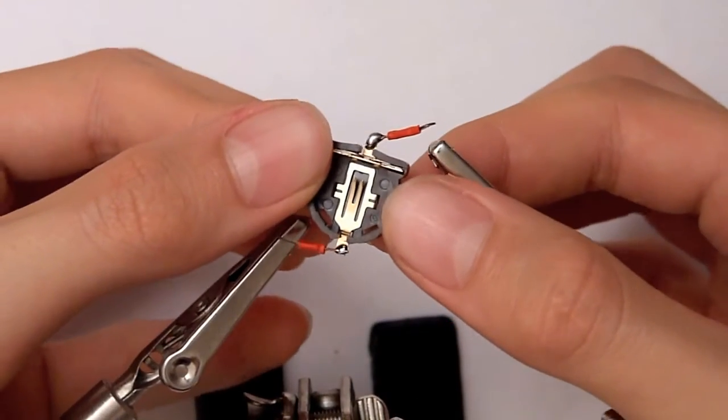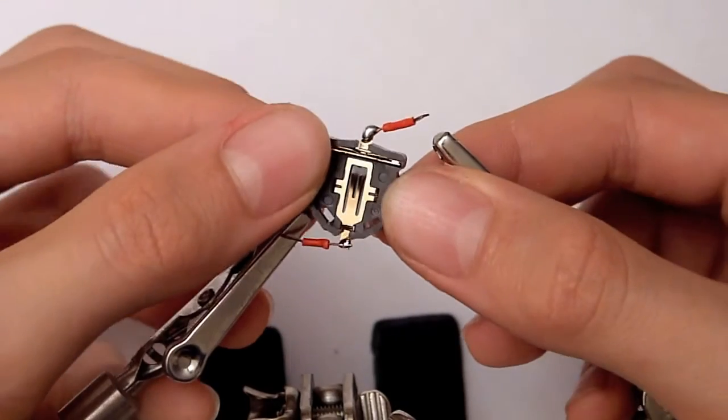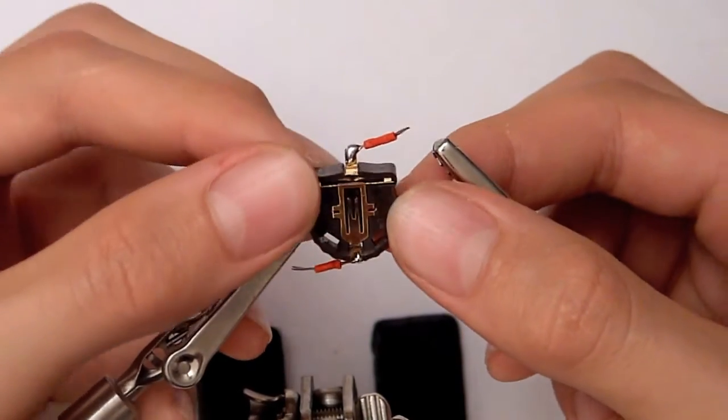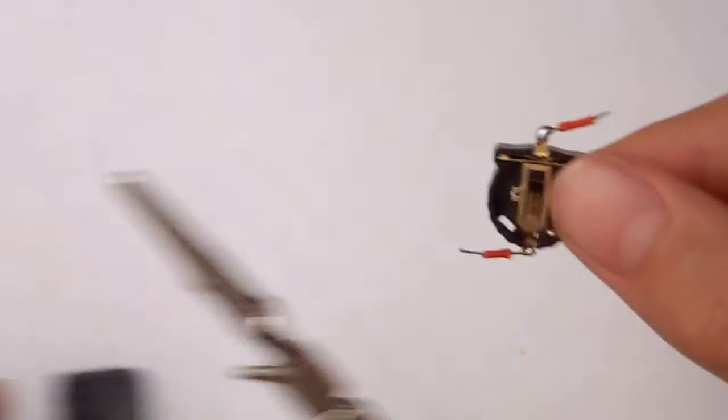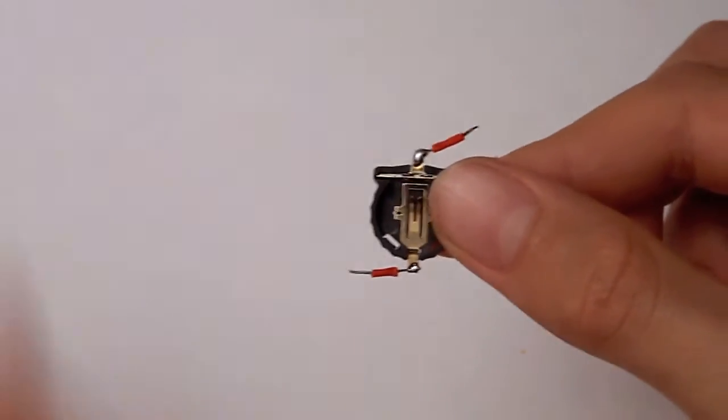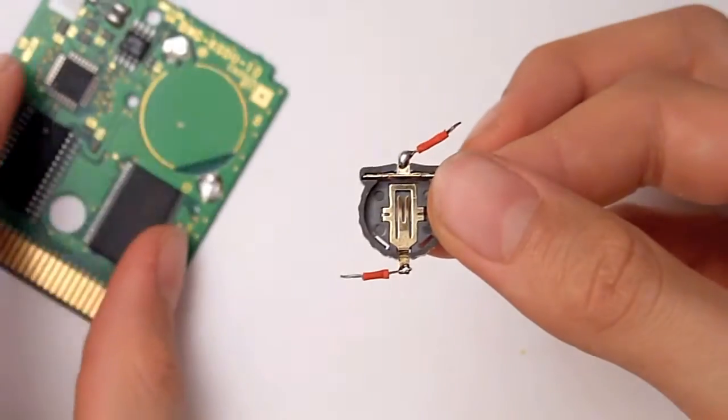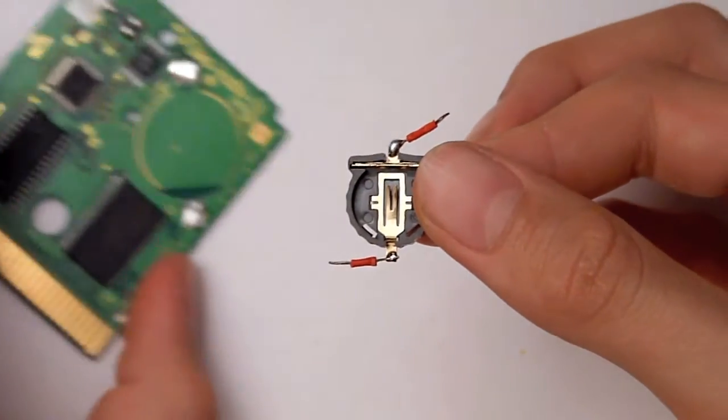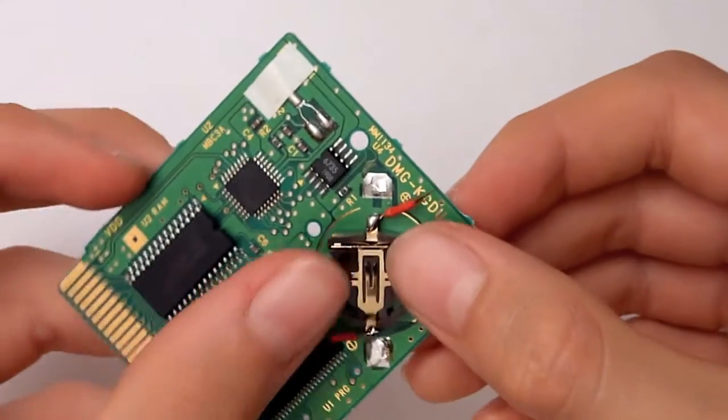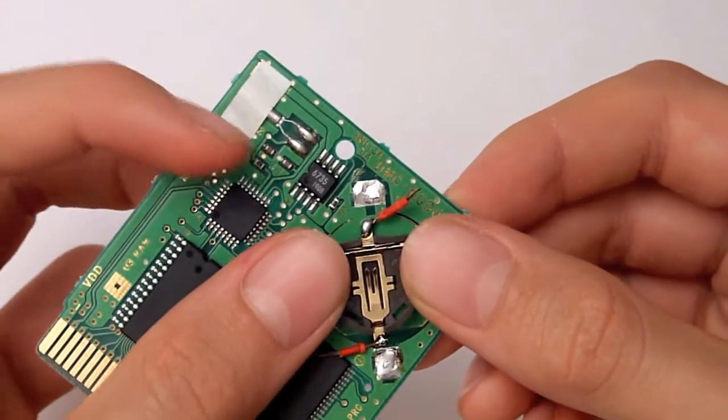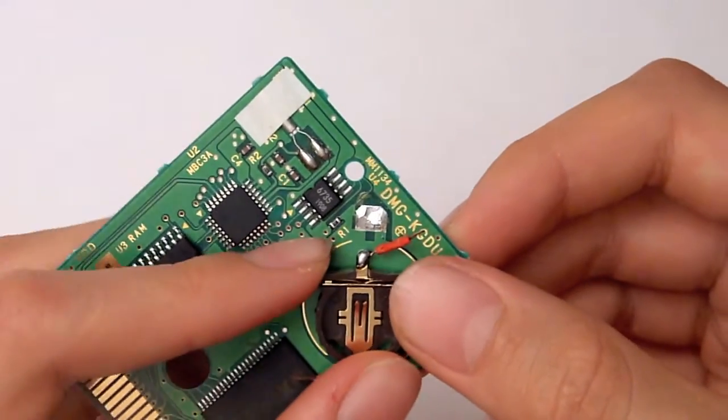That was a lot easier than I thought. I've got it on, they're nice and solid. One thing to remember is, when you're doing this, you want to make sure that the wires don't touch any of the other things here because it could short circuit, so make sure that it's all good. Now I'll hot glue it.